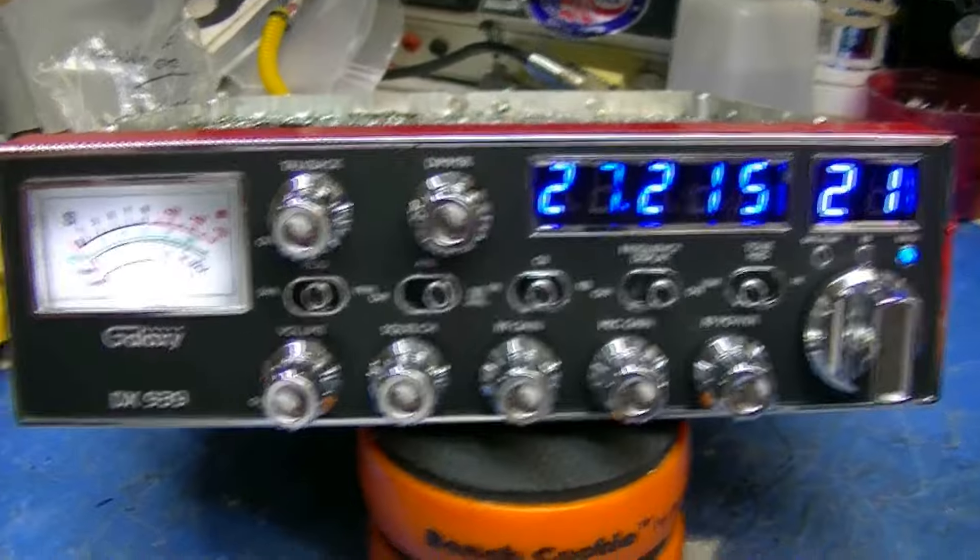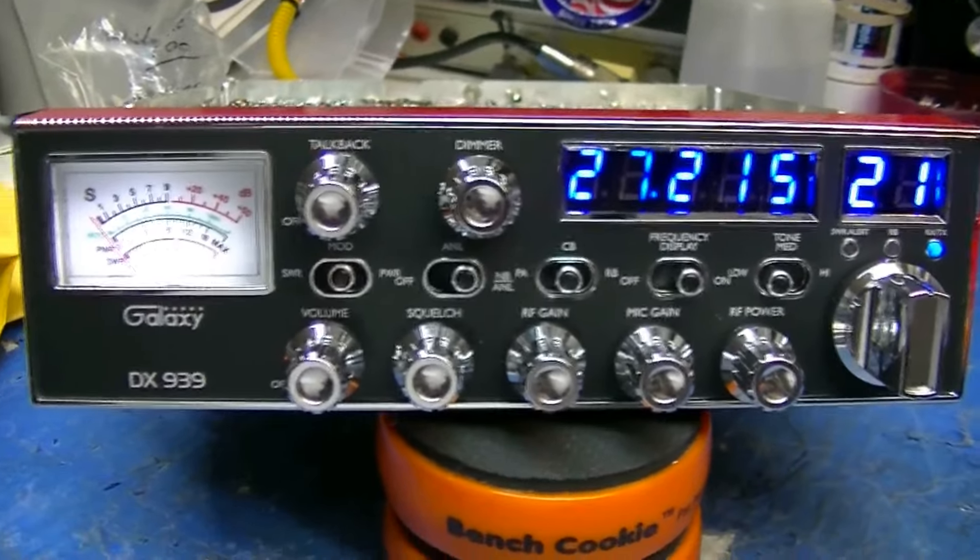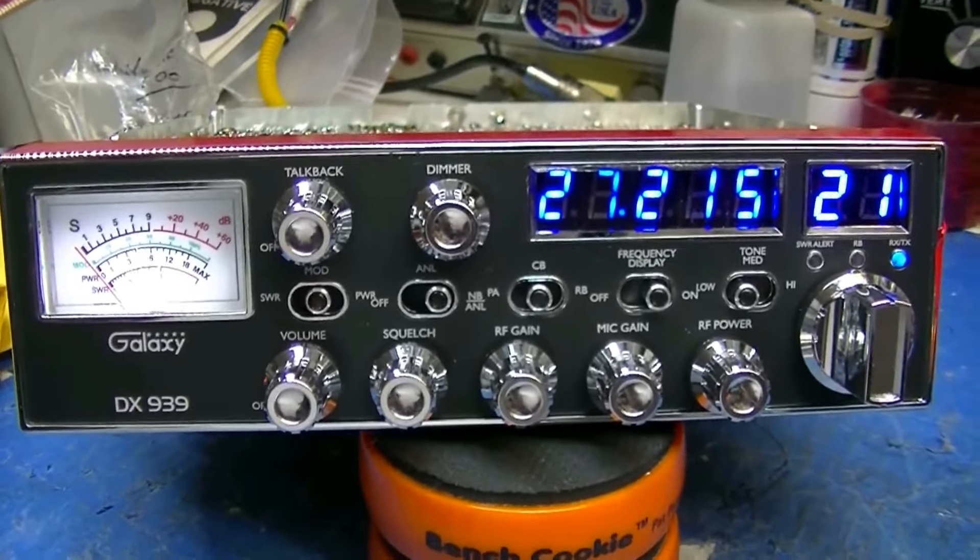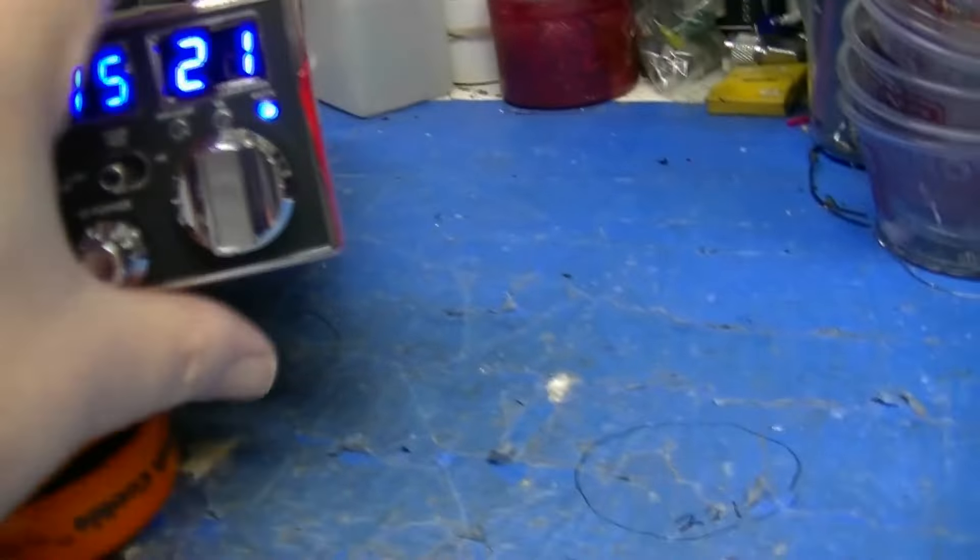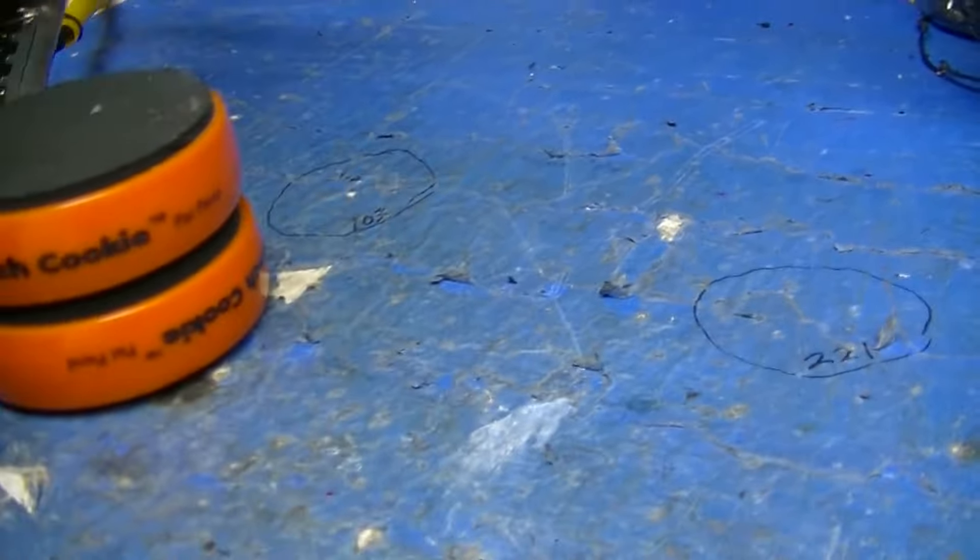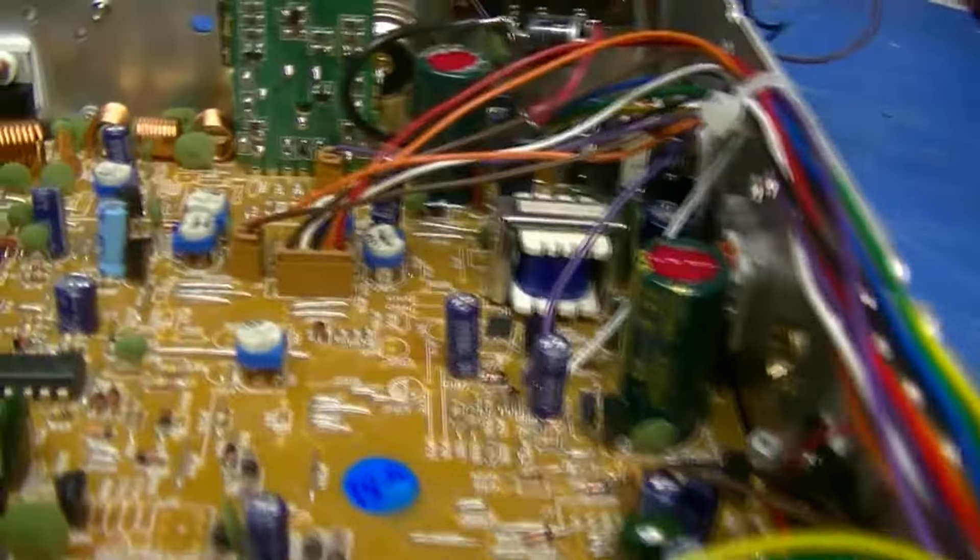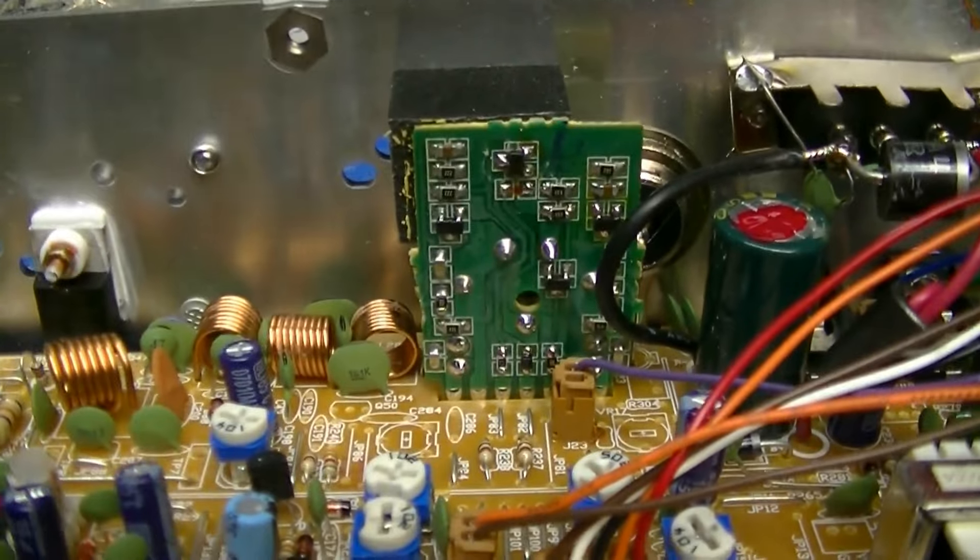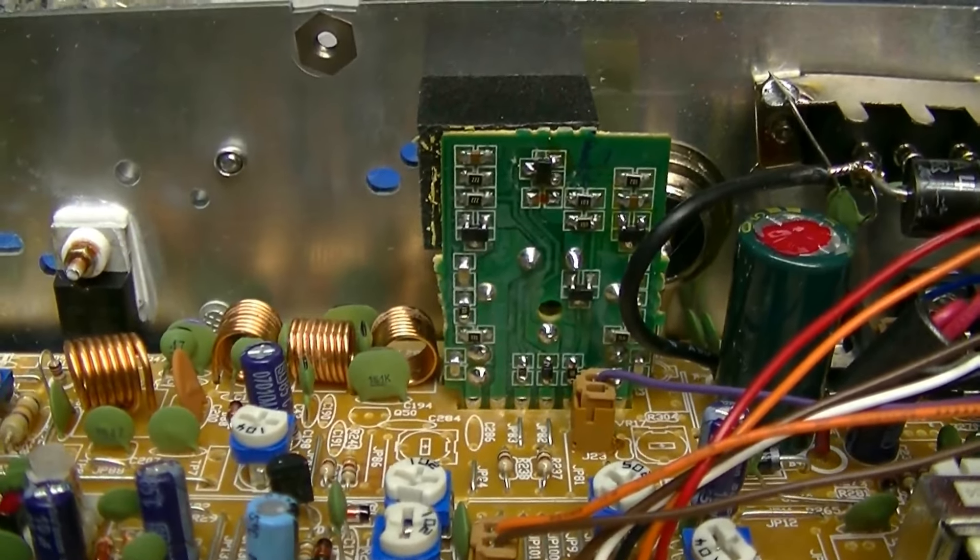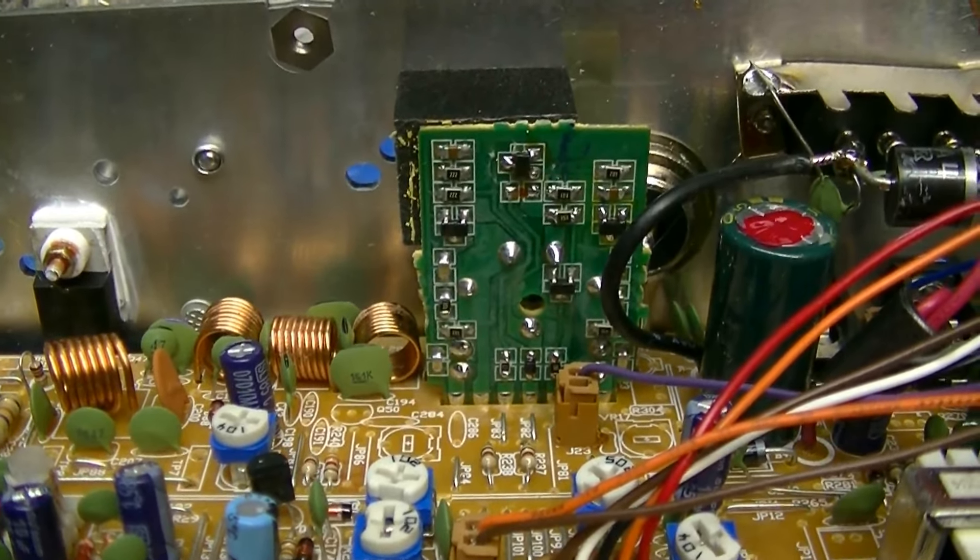I'm getting ready now to do the max mod, and then I'm going to put your echo in. And while I'm on the subject of the echo, you asked me if I could put two controls in the back. There's really no way to do that, mainly because of that SWR board.